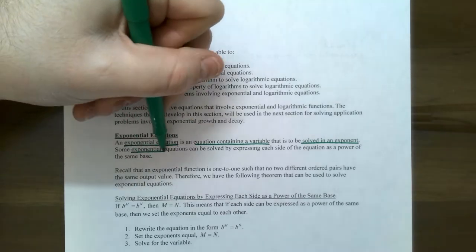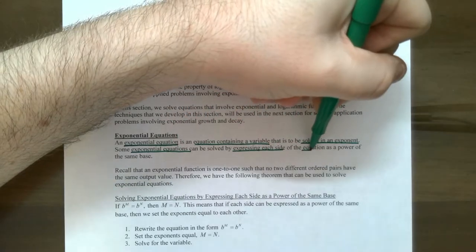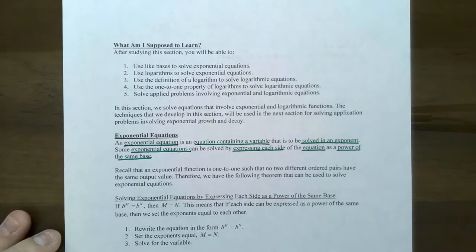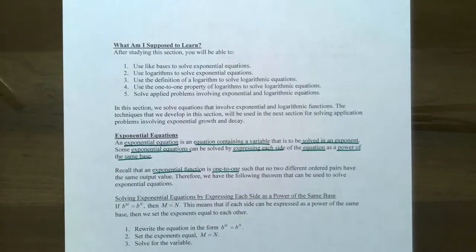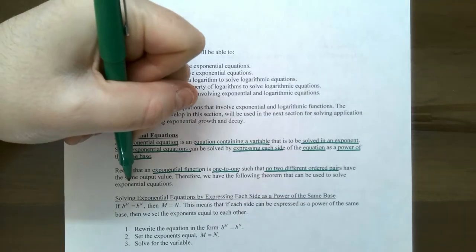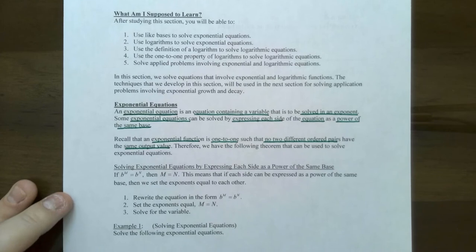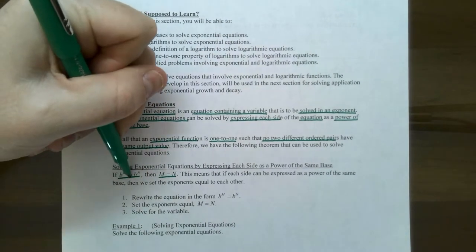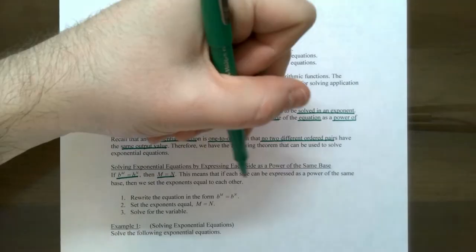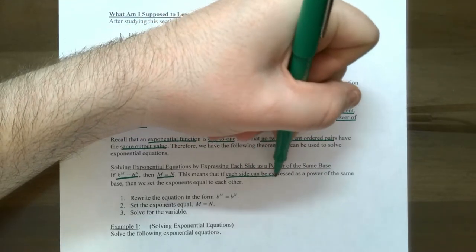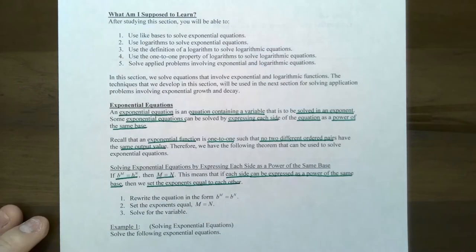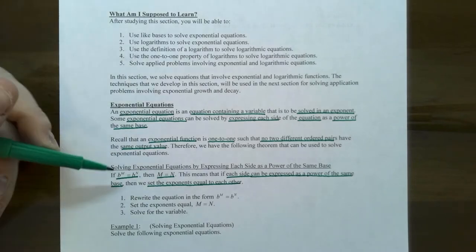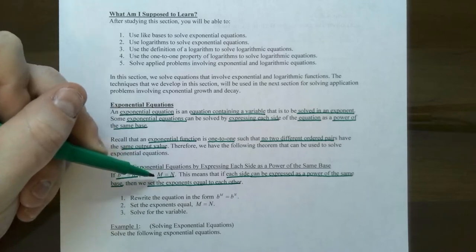Some exponential equations can be solved by expressing each side of the equation as a power with the same base. To use this method we need to use the fact that exponential functions are one-to-one, meaning inverse functions exist and no two different ordered pairs have the same output. If the bases are equal to each other, then the exponents are equal. If each side is expressed as a power with the same base, the exponents can be set equal to each other and you can solve.